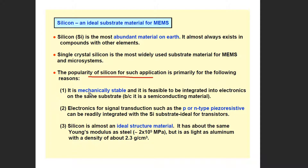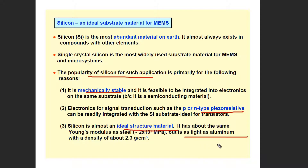It is mechanically stable. It is a semiconductor and also a P or N type piezoresistive material. It is an ideal structural material. It has about the same Young's modulus as steel, but it is lighter than steel and aluminum.